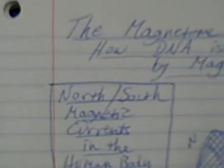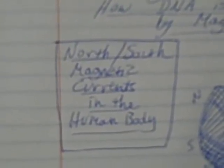How DNA is patterned by magnetism through north-south magnetic currents in the human body that are oriented right and left or left and right that alternate left-right and right-left.